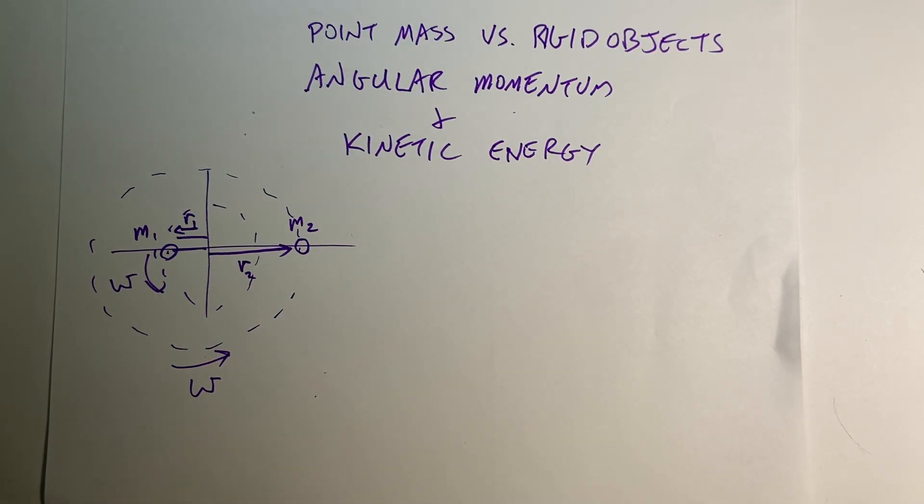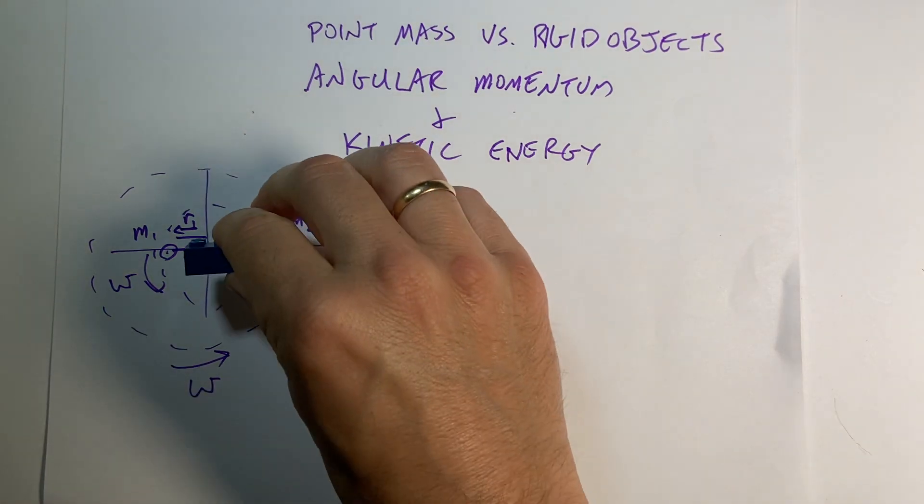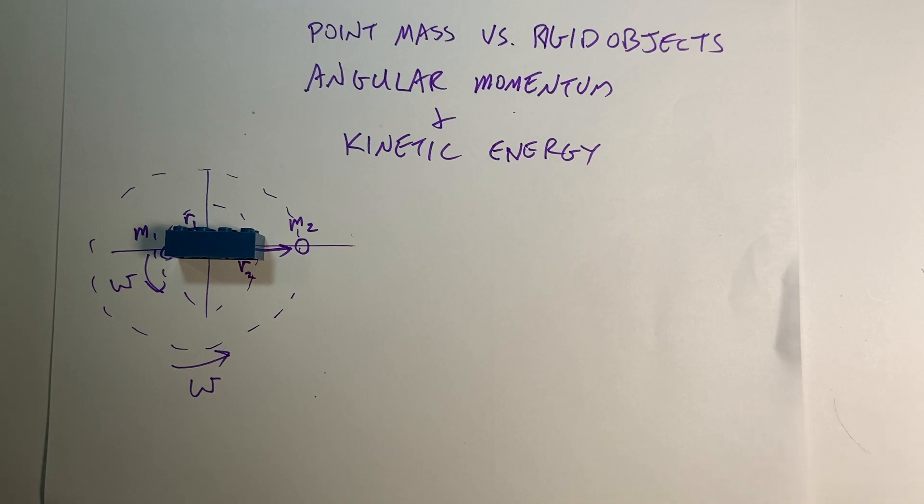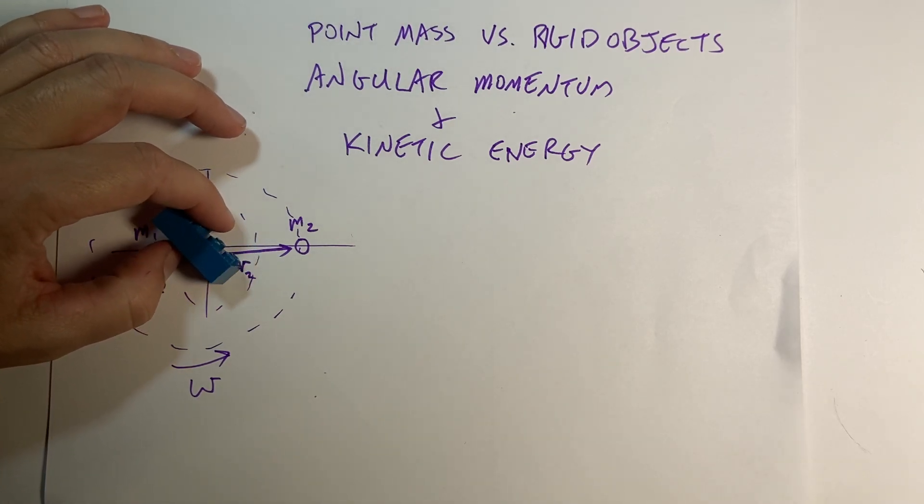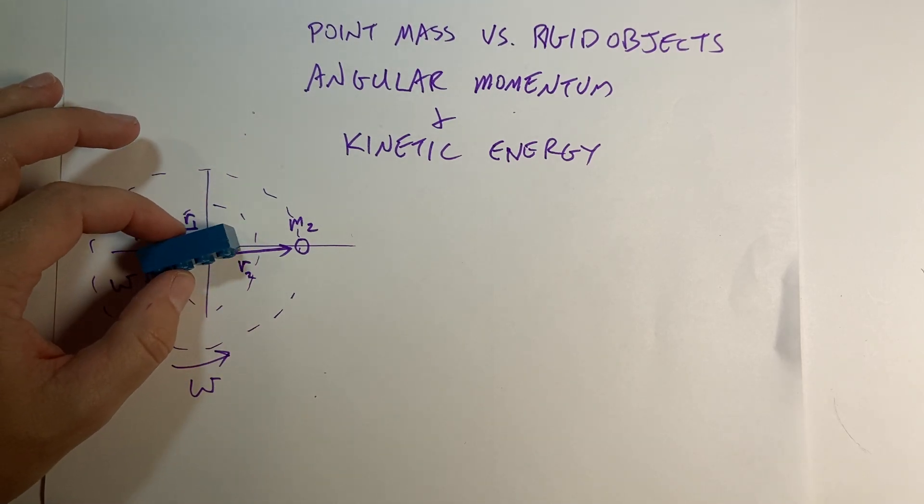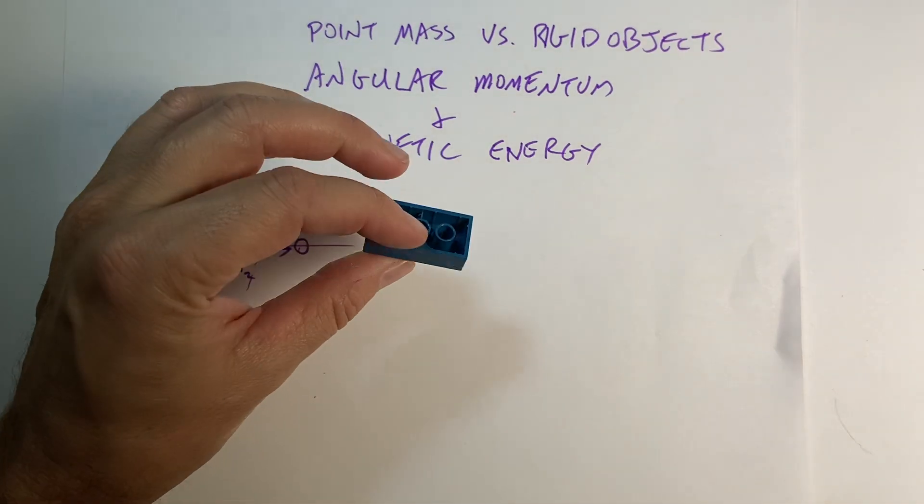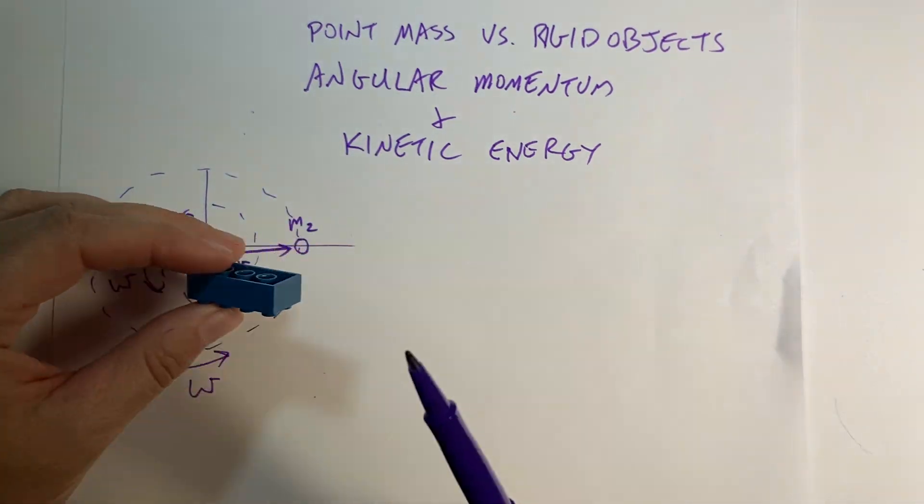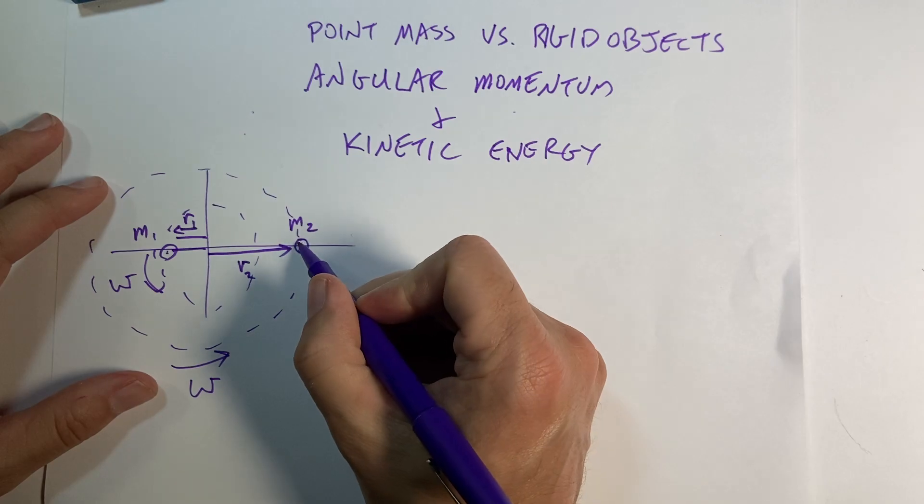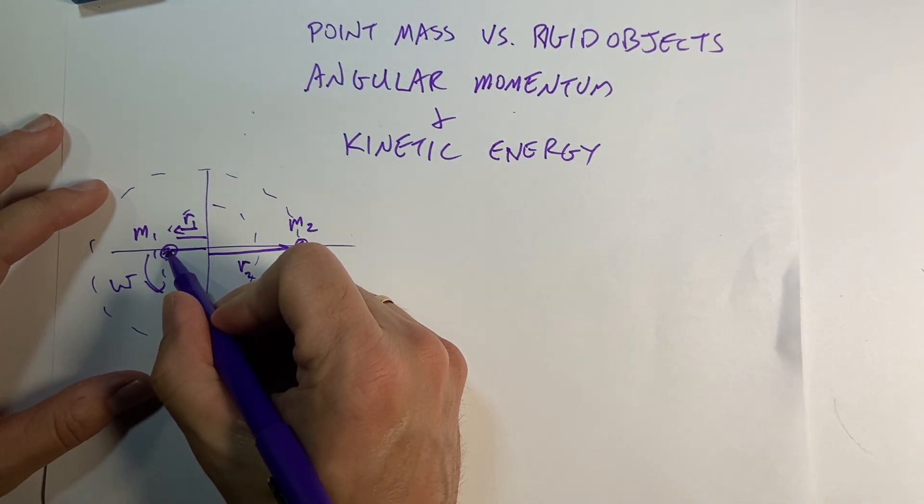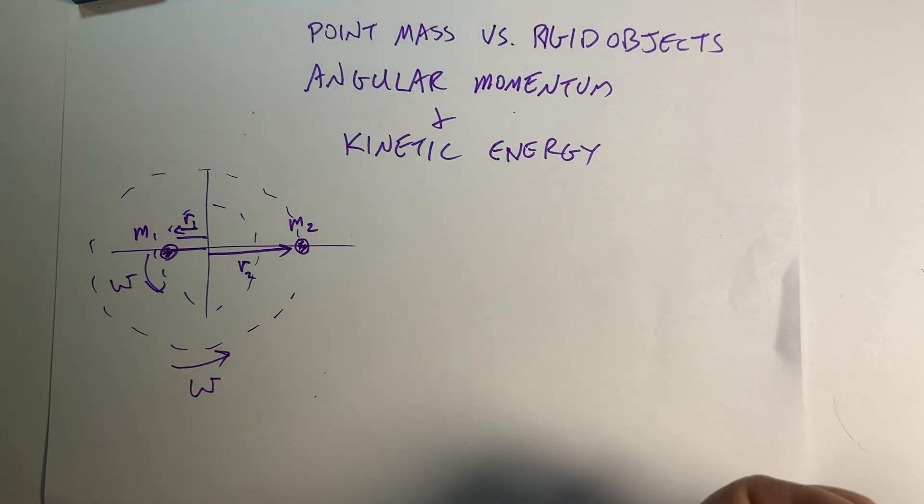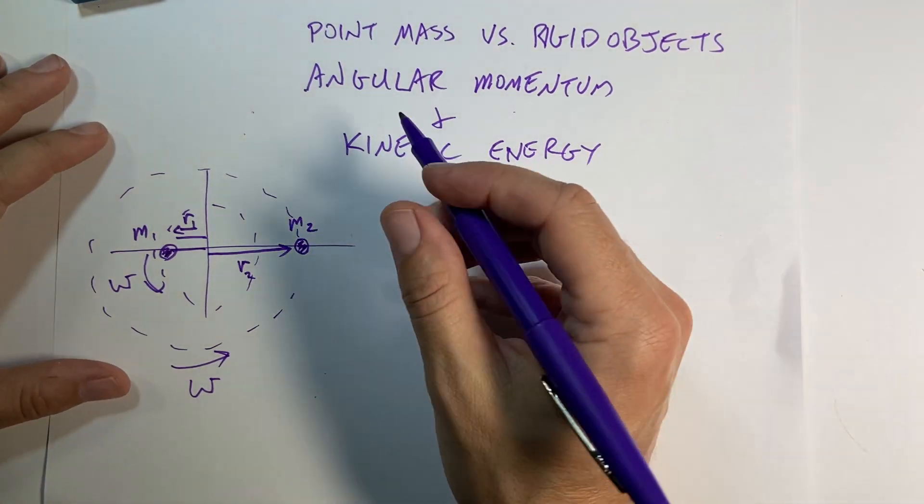Okay, so we're talking about rotational motion of objects. I could have this Lego thing I described, and it could be rotating. I could describe it in terms of it being a rigid object, so it has dimensions but doesn't change shape, or I could have just some point masses.